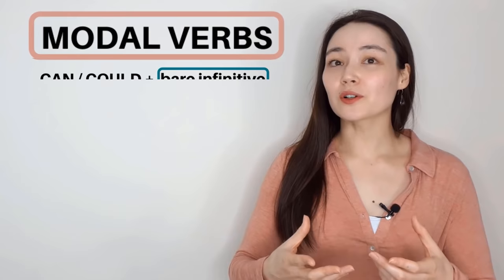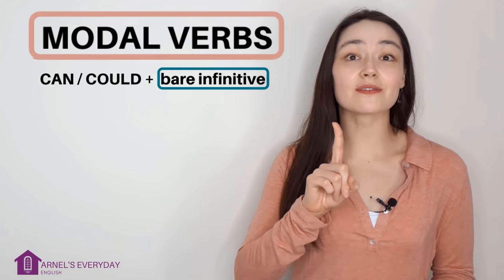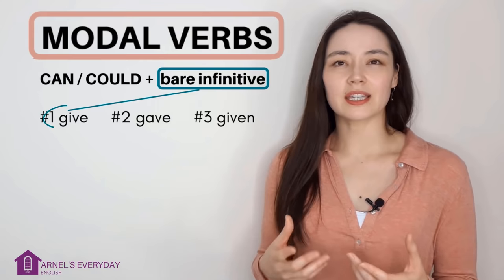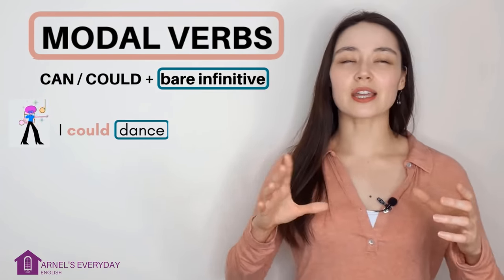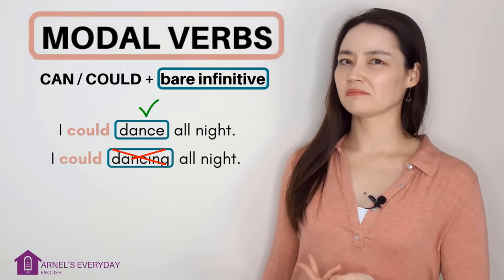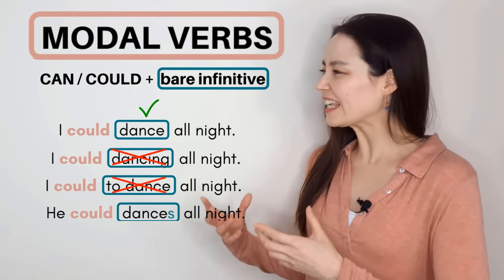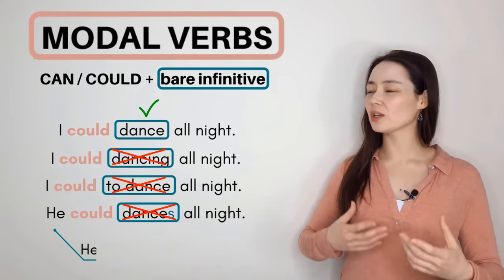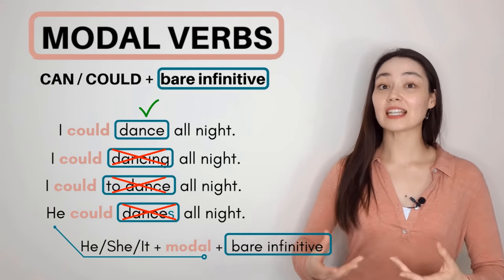First, modal verbs are always followed by the bare infinitive. The bare infinitive is verb number one, without 'to'. For example: give, gave, given — 'give' is verb number one. So we say 'I could dance all night,' not 'I could dancing,' not 'I could to dance.' And even if your subject is he, she, or it, we use the bare infinitive — 'he could dance,' not 'he could dances.'